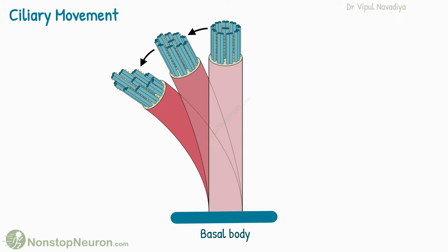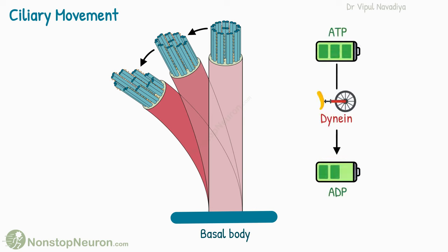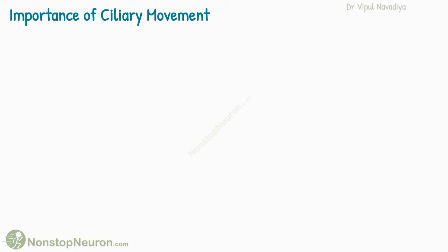So this is how ciliary movement is produced. Dynein arms use ATP to crawl, so the ciliary movement is an energy-consuming process. Now let's see where we can see such ciliary movement in the body, and its importance.